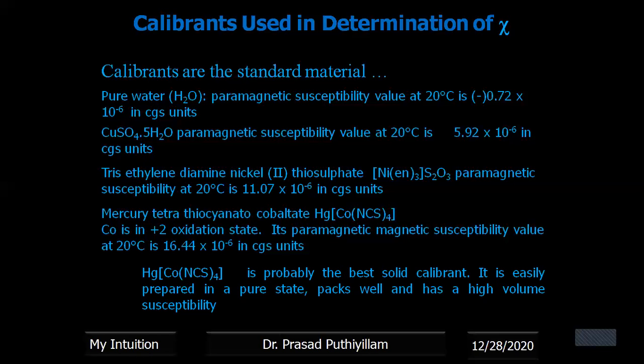Other than that, it can be used as the best solid calibrant because it can be easily prepared in pure state, it packs well as it has got high volume susceptibility. So because of all these parameters, we can conclude that mercury tetrathiocyanatocobaltate is the best calibrant used in Gauss method.